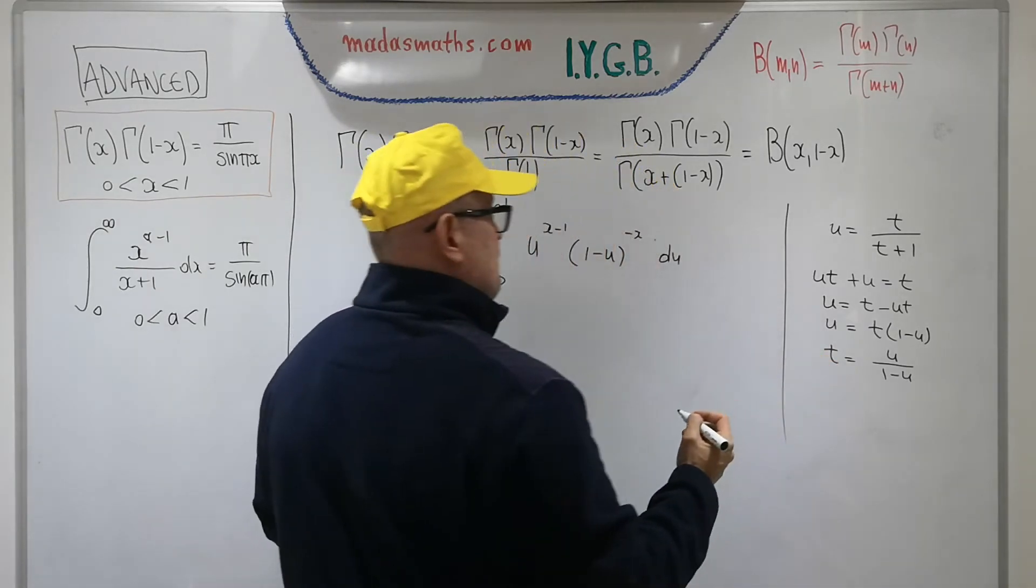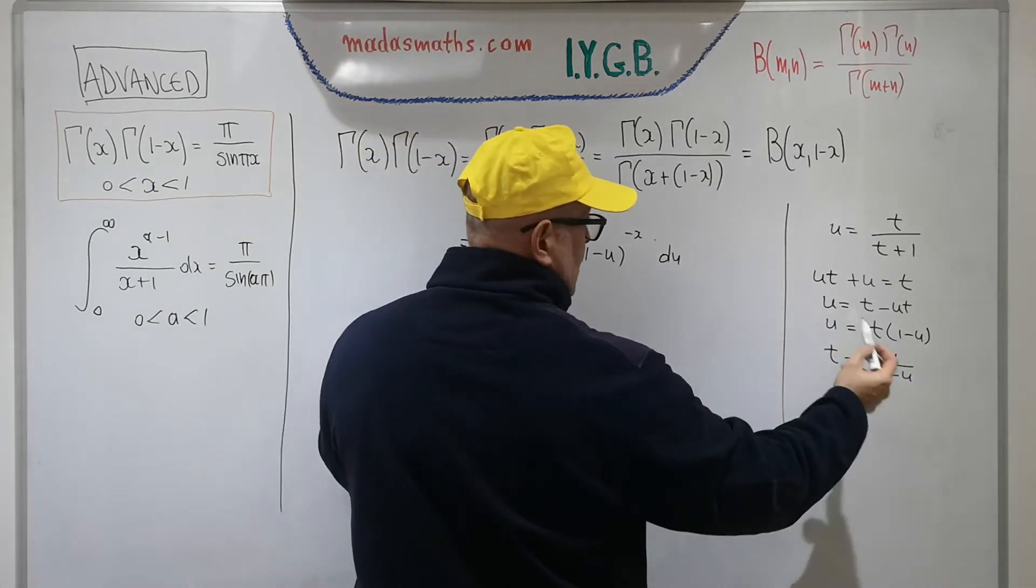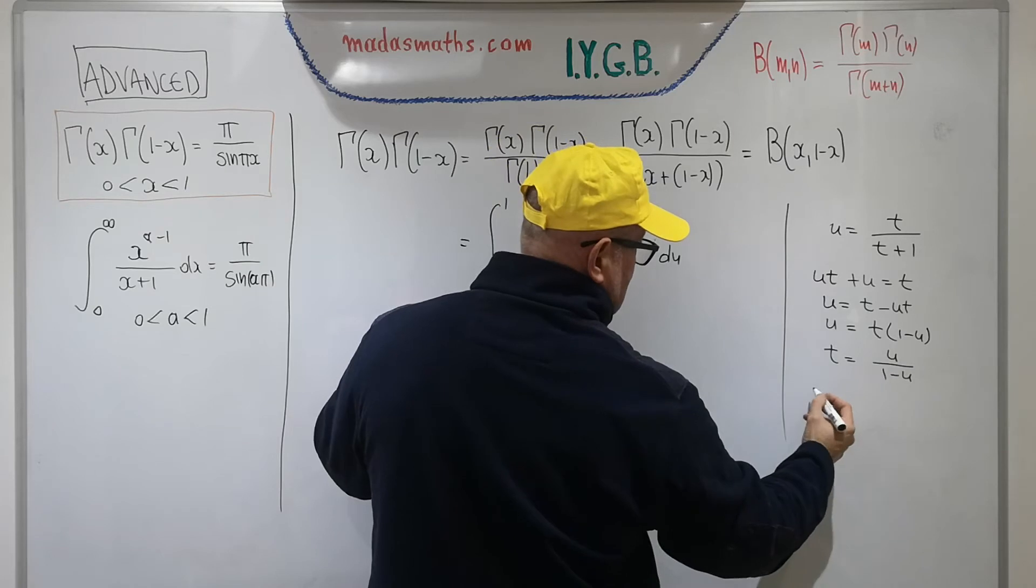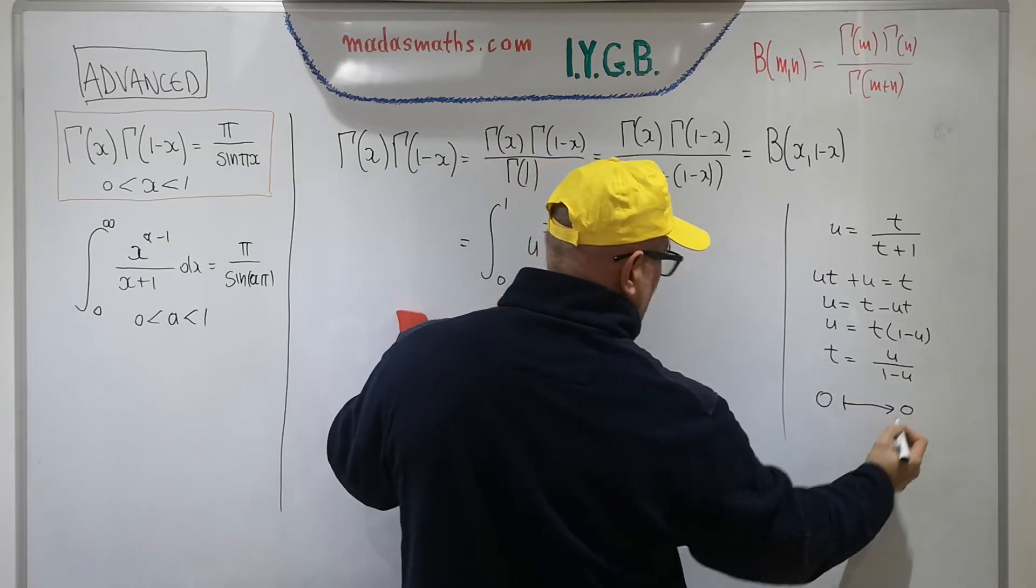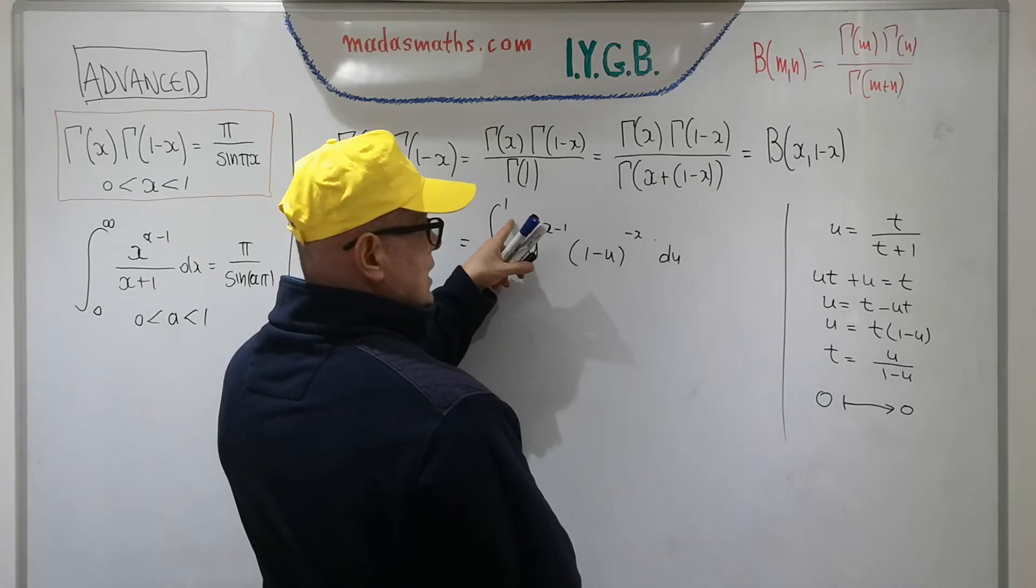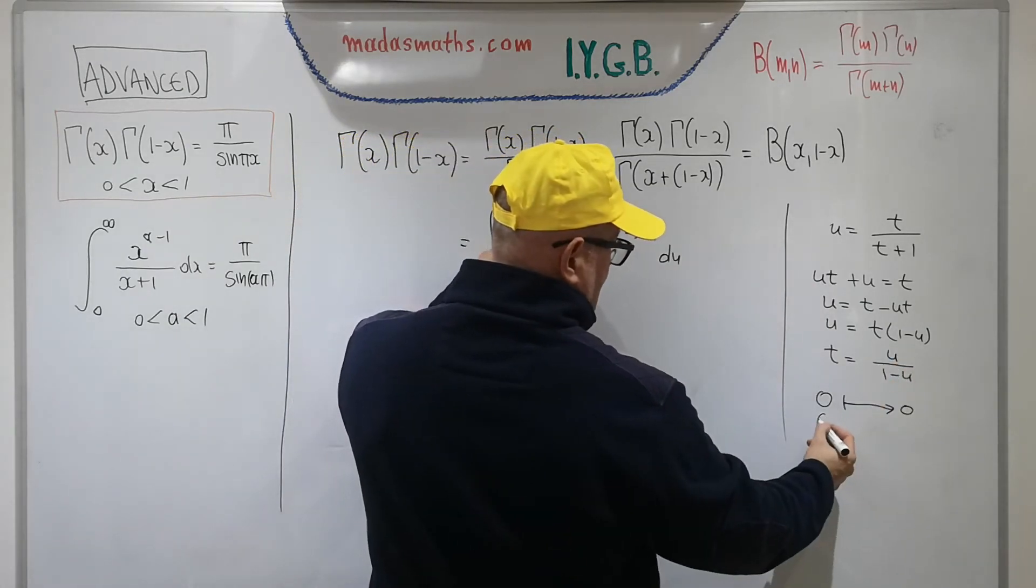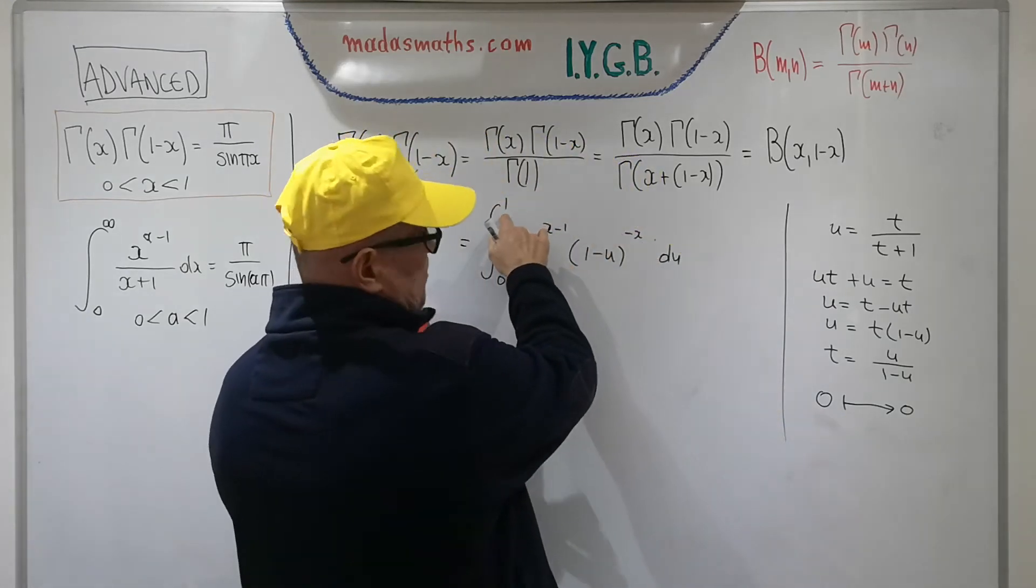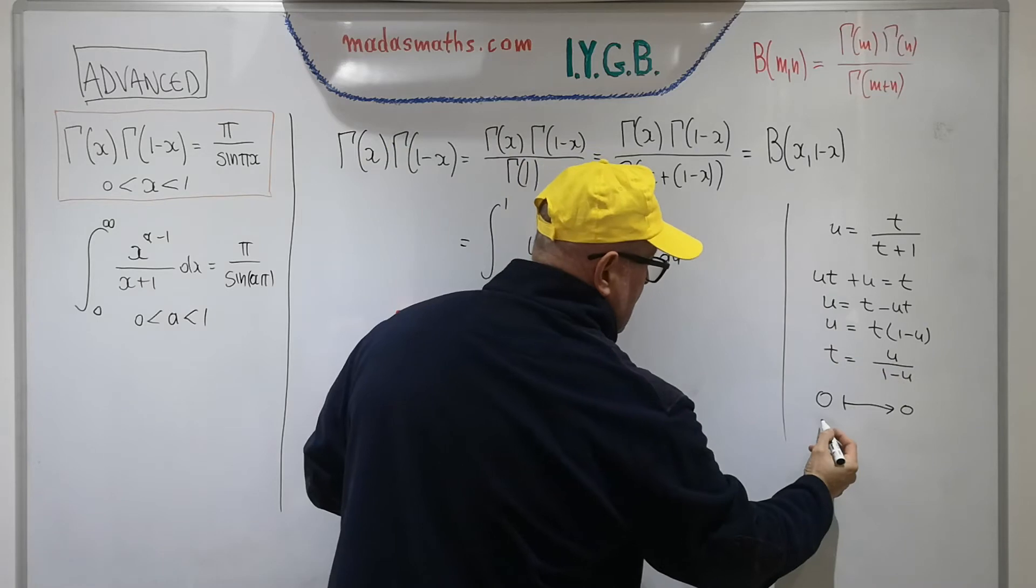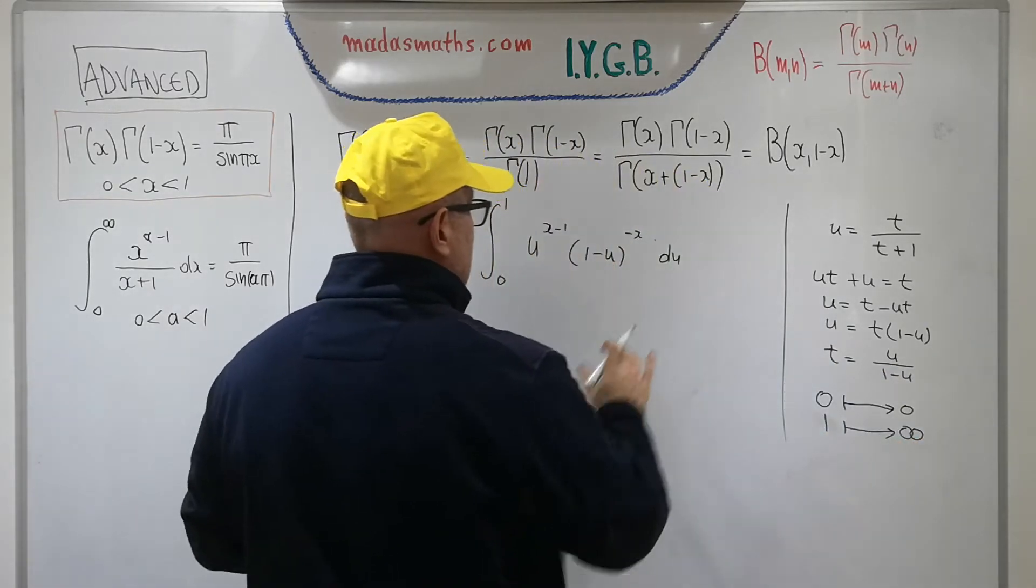Let me make t the subject. So ut plus u equals t, and then u equals t minus ut, and then t times 1 minus u equals u, so my t is going to be equal to u over 1 minus u. Let's change the limits. When u equals 0, this becomes 0, so 0 maps to 0. When u equals 1, this becomes infinity, so the top limit becomes infinity.